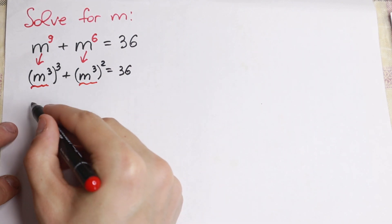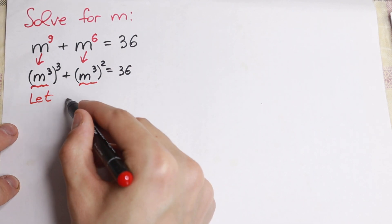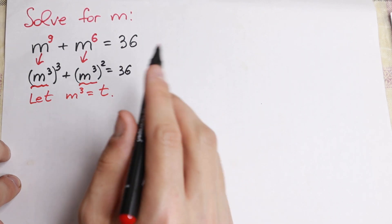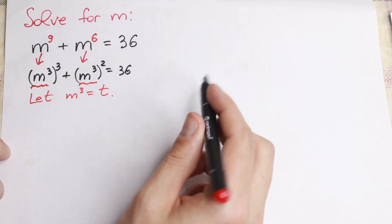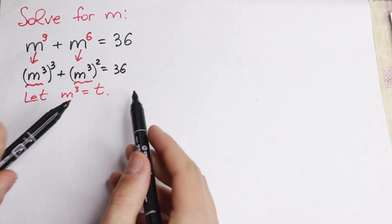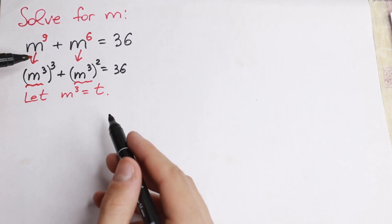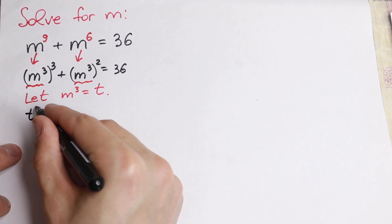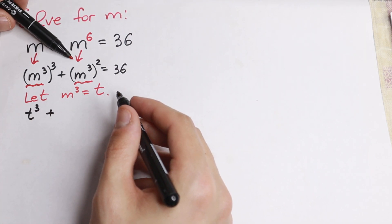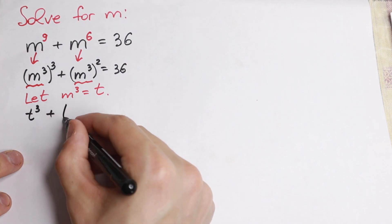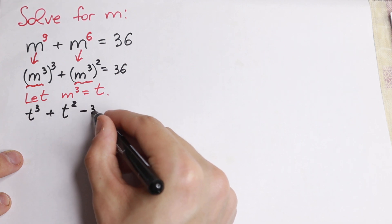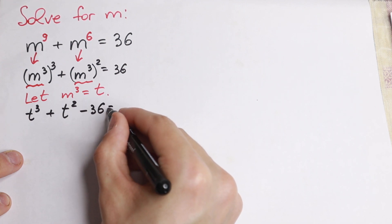So we can use a substitution. Let m cubed equal to t. As a result, we will have t cubed plus t squared, and I bring the 36 to the left-hand side, minus 36 equal to 0.